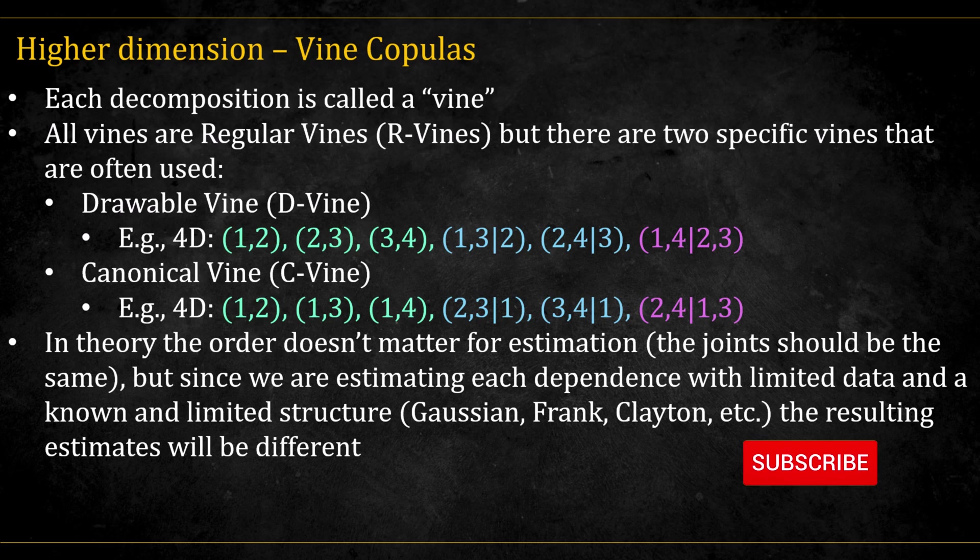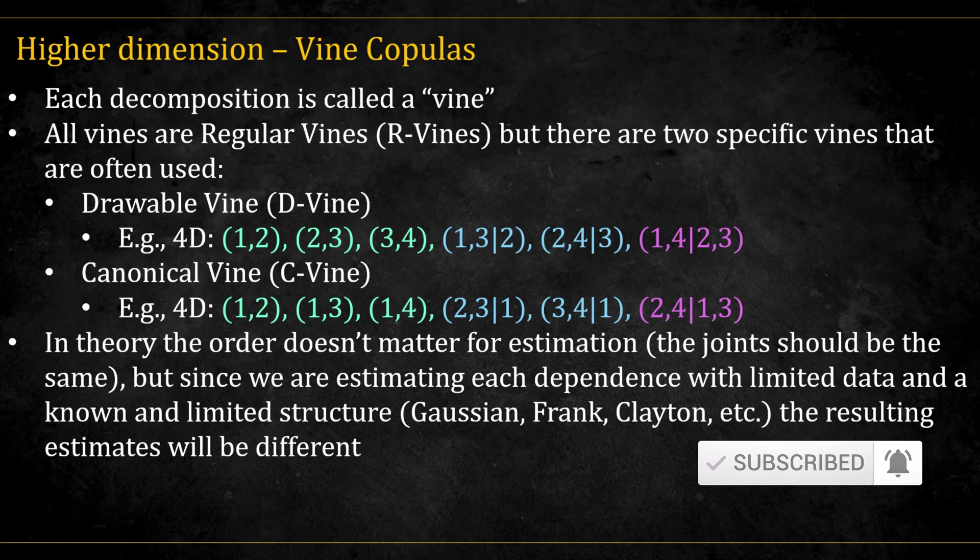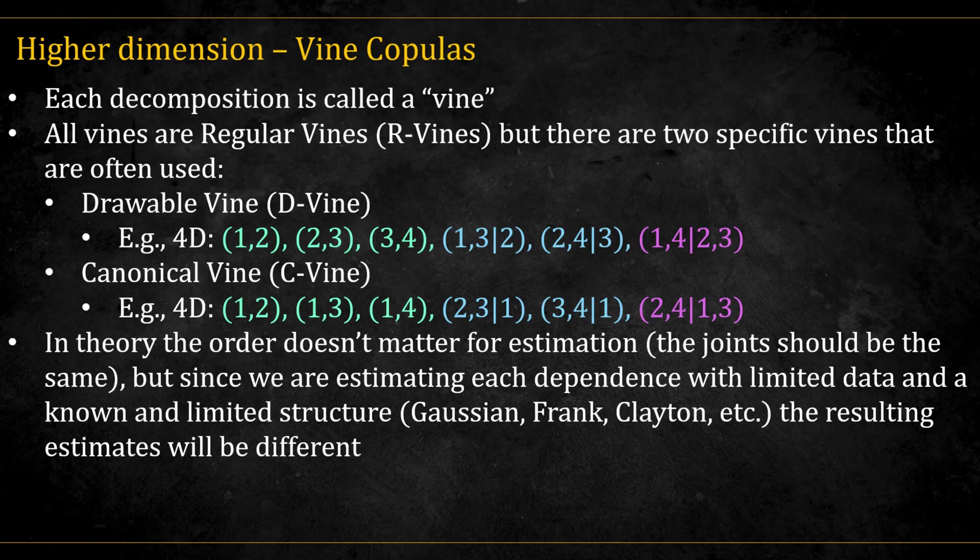In theory, all vines represent the same underlying joint distribution. But in practice, when we estimate from limited data and restrict the copula families, different vine structures can lead to different results.